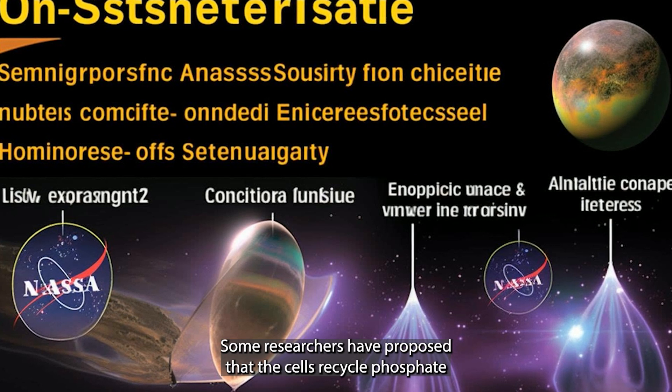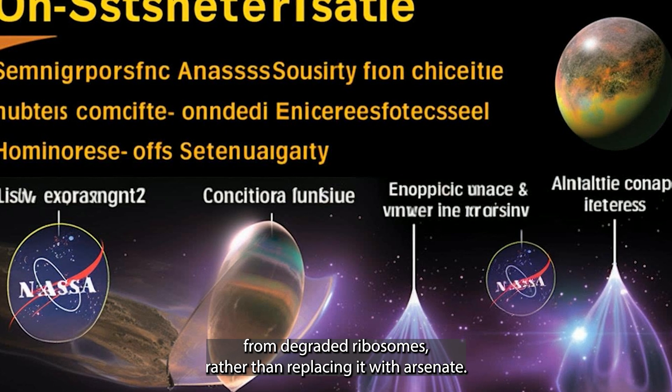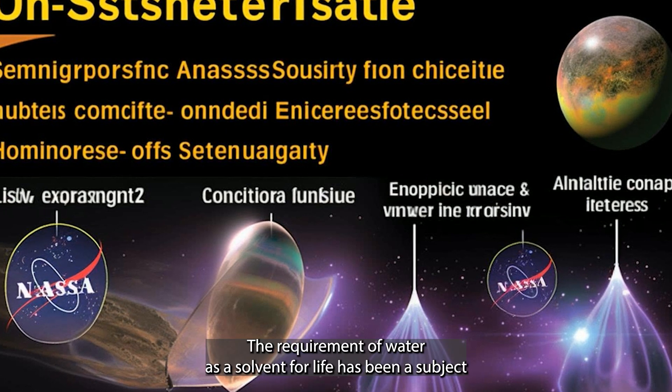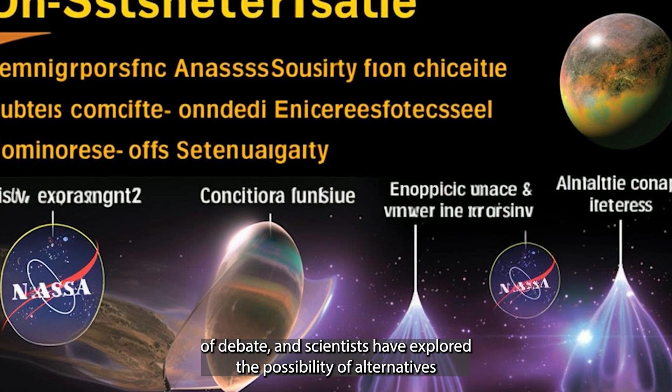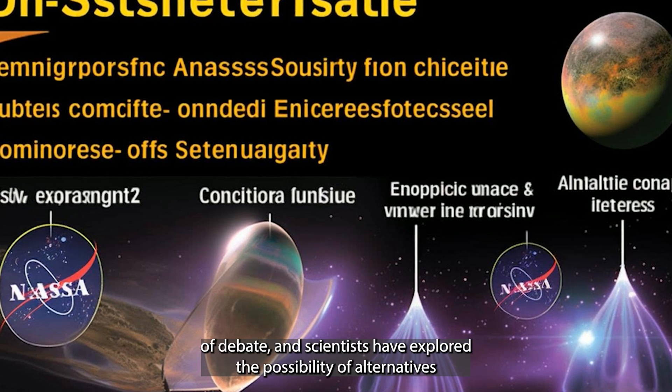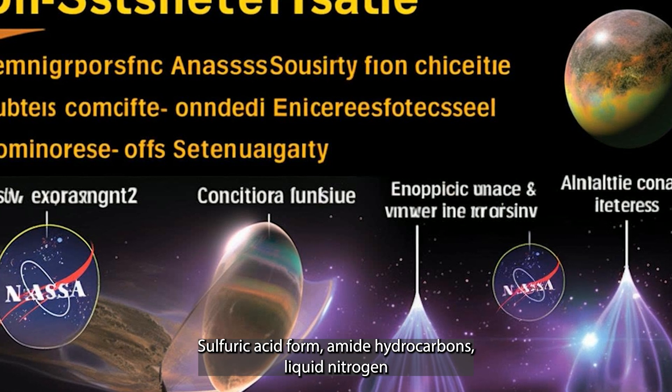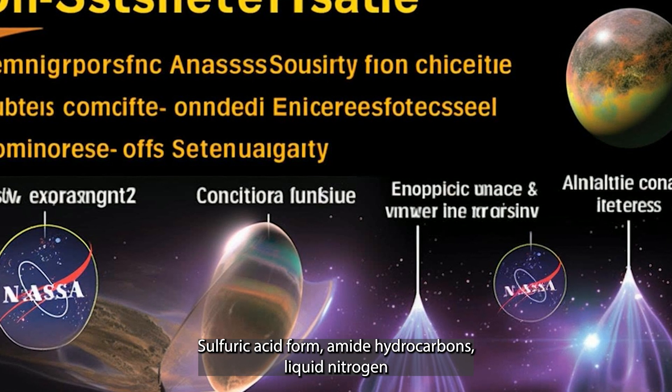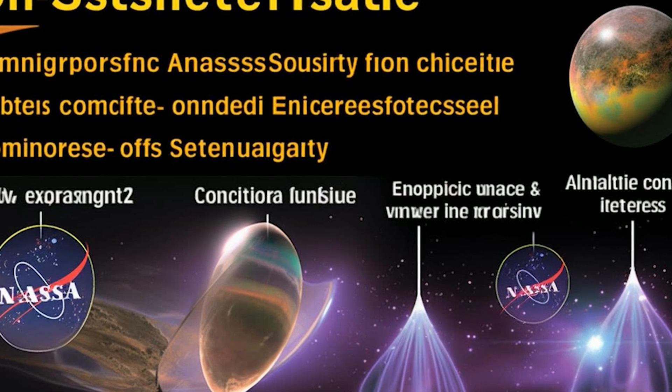Some researchers have proposed that the cells recycle phosphate from degraded ribosomes rather than replacing it with arsenate. The requirement of water as a solvent for life has been a subject of debate, and scientists have explored the possibility of alternatives such as ammonia, sulfuric acid, formamide, hydrocarbons, liquid nitrogen, or hydrogen in the form of a supercritical fluid.